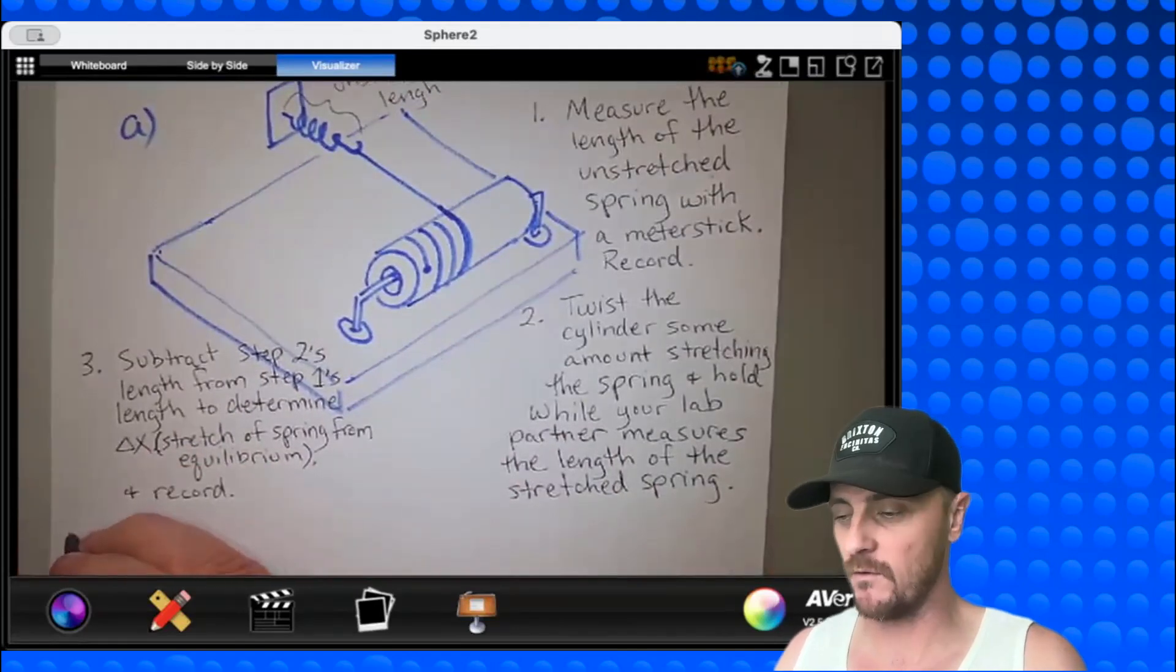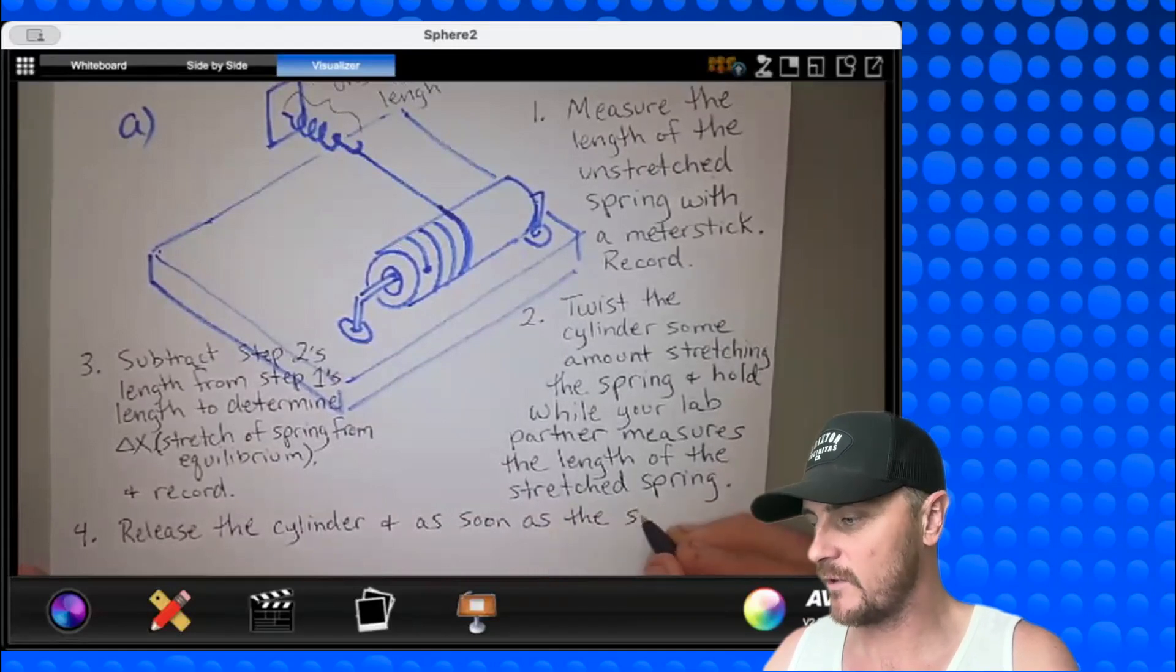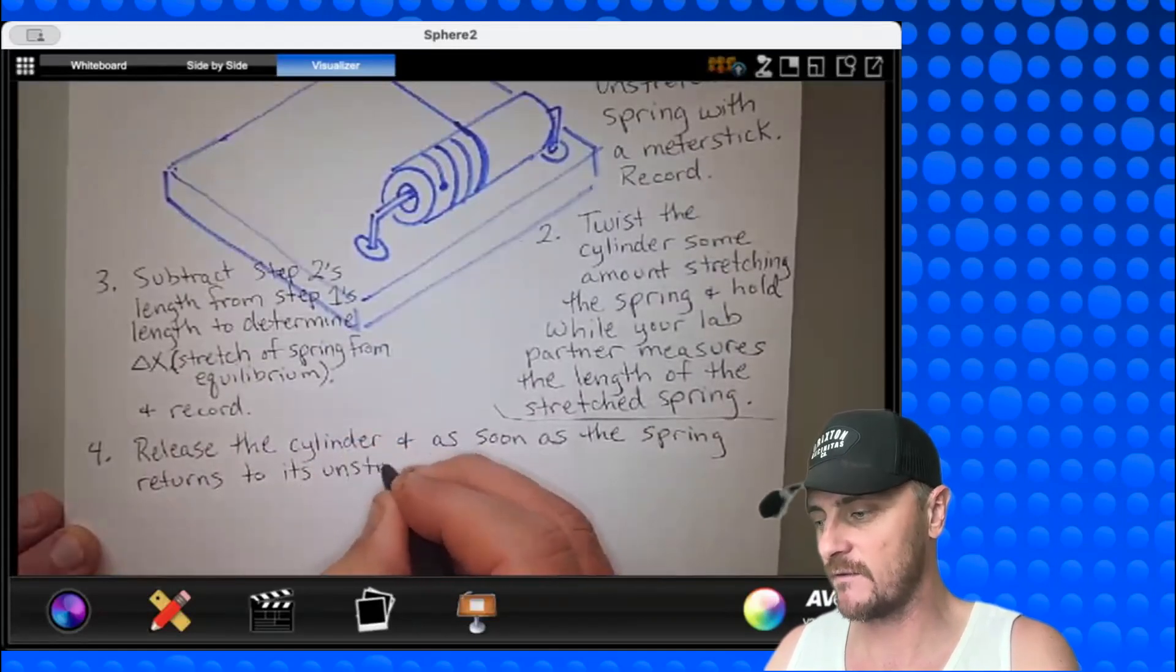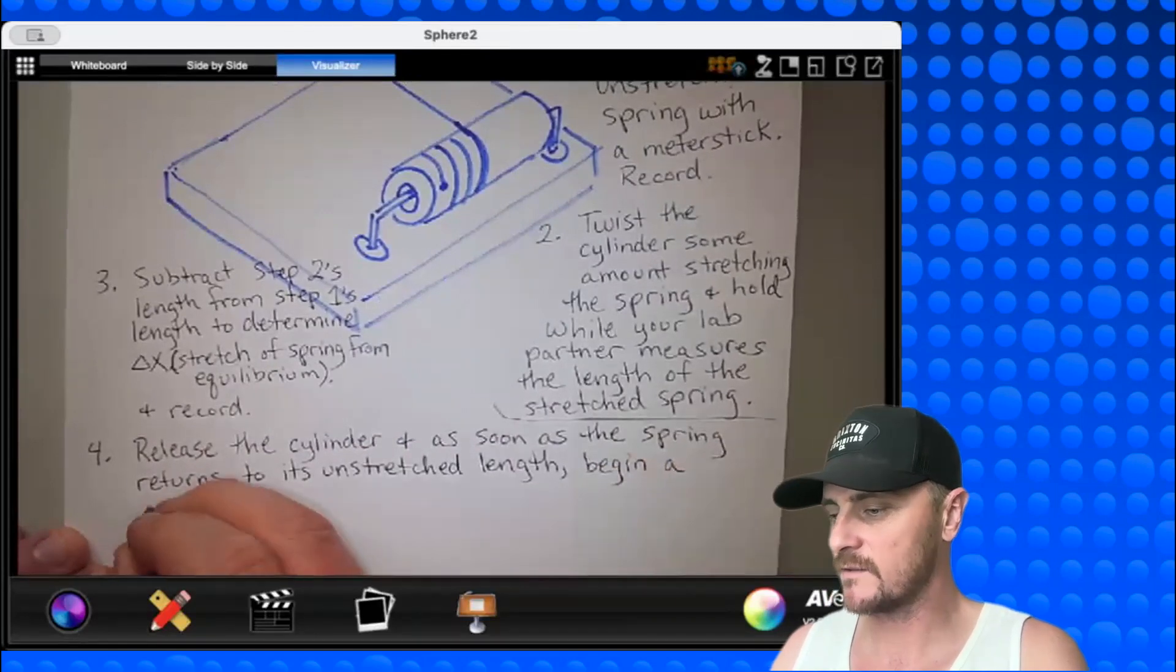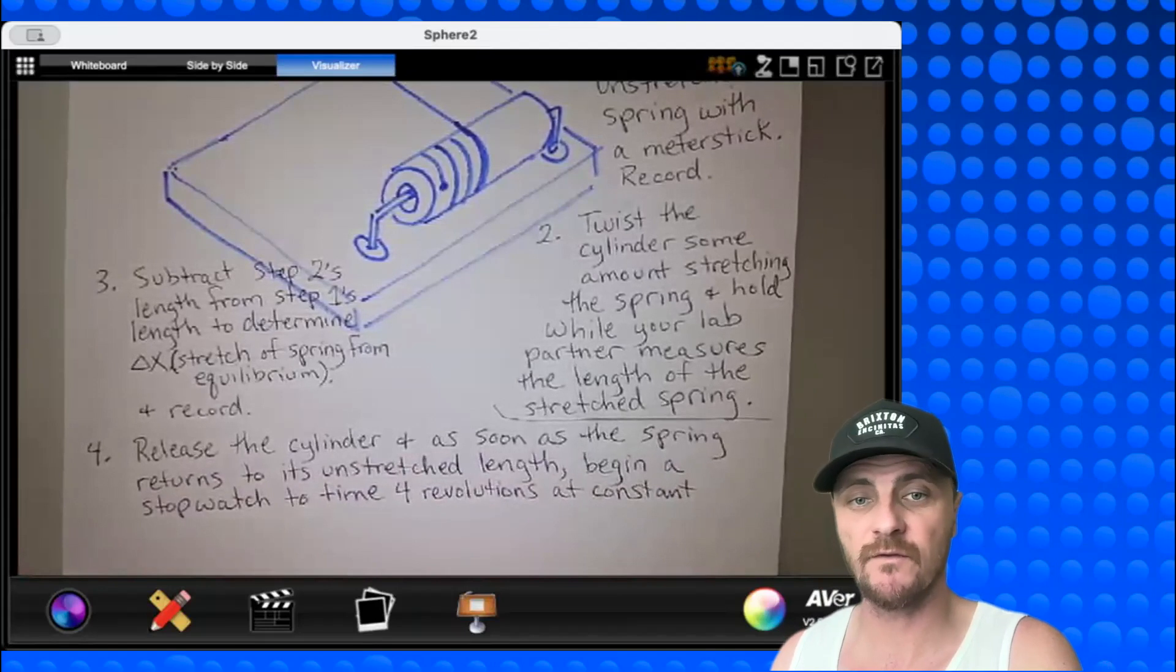Step four, release the cylinder, and as soon as the spring returns to its unstretched length, begin a stopwatch to time four revolutions at constant angular velocity.